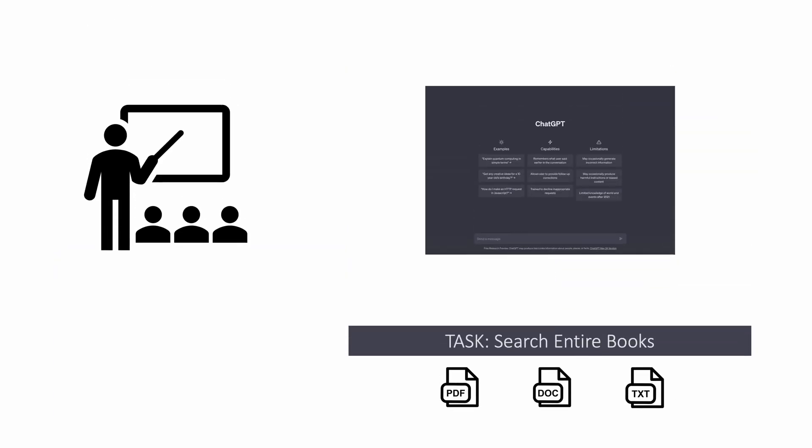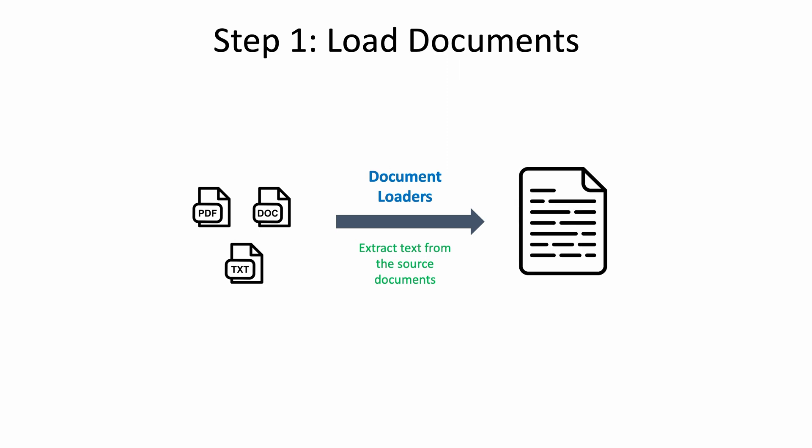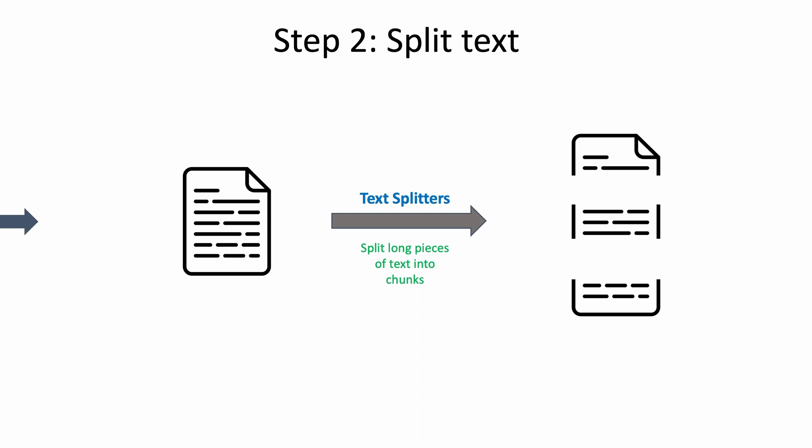Now the way we can overcome this is using Langchain. In Langchain, the typical QA process starts with first loading the document with something called document loaders which helps us extract the text from source documents. And there are a number of document loaders available in Langchain which support a variety of document formats. Now once the text is available to us, we need to split that text using something called text splitters, which takes the long pieces of text and converts it into small chunks.